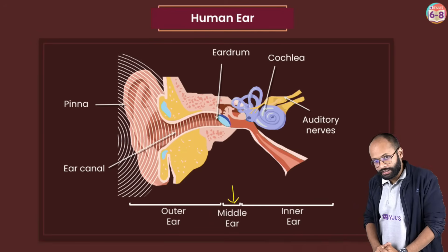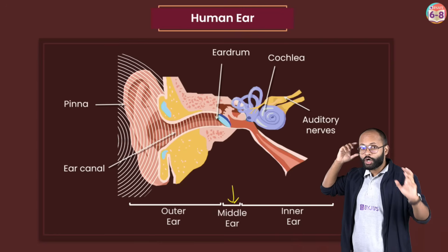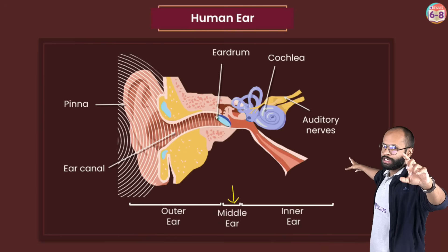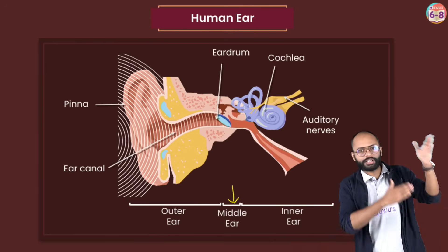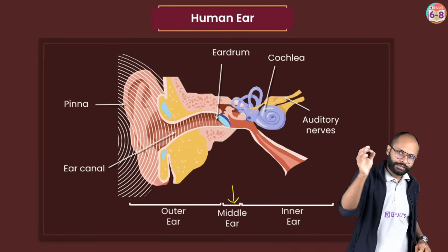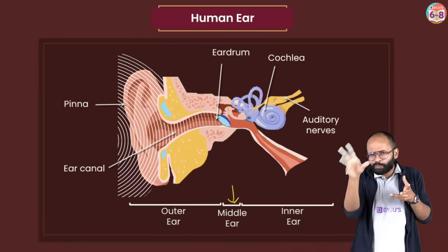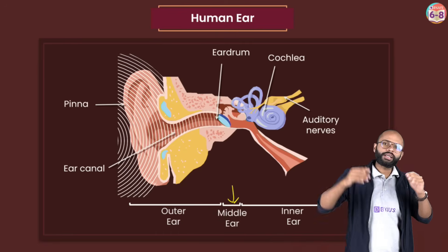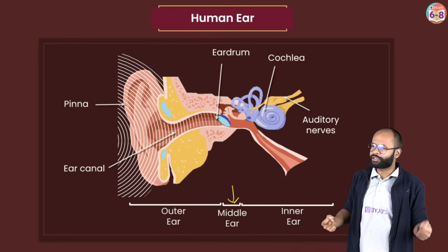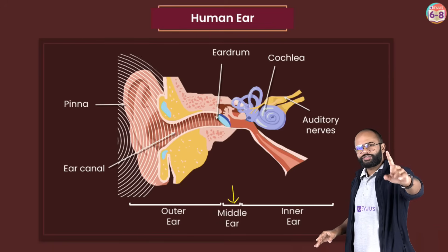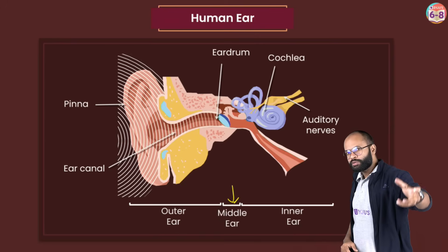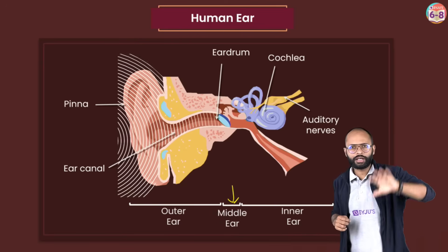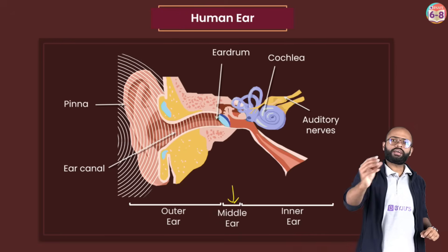Finally there is the inner ear. Your brain understands electrical signals — the inner ear converts sound signals into electrical signals so your brain can understand. In the inner ear there is a spiral structure filled with fluid called cochlea. This structure has small hairs inside it; when vibrations come, these hairs move and convert them into electrical signals sent to the brain. So: outer ear — catching; middle ear — sensing and amplification; inner ear — conversion to electrical signals.